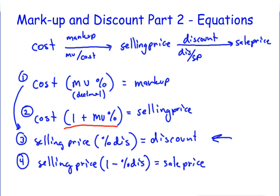and so we're going to use the equation over here, which is the last one, that says use a selling price, percent discount, and sale price, which are the three things we're talking about.